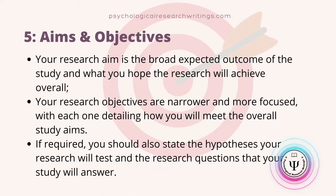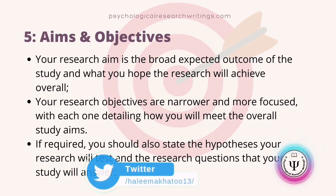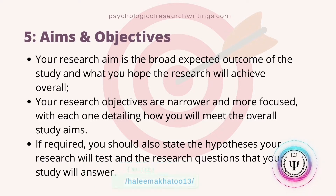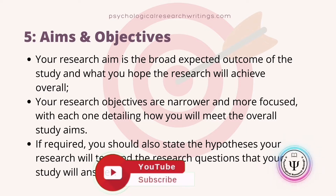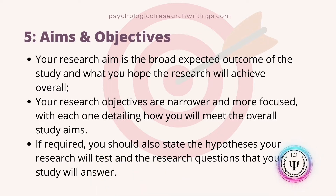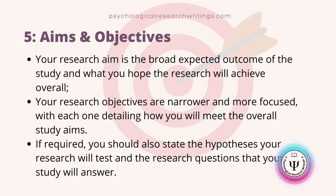Once you have established your research problem, your proposal should outline a set of aims and objectives. Your research aim is the broad expected outcome of the study and what you hope the research will achieve overall. Your research objectives are narrower and more focused, with each one detailing how you will meet the overall study aim. If required, you should also state the hypothesis or research questions that your research will answer.